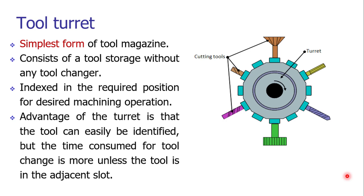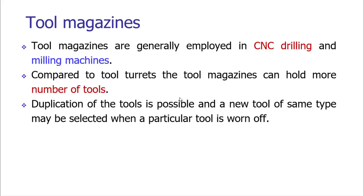Tool turrets are basically used in semi-automatic mode. In some automatic operations where limited tools are needed, the tool turret arrangement is compact and useful. Some CNC machine tools do have an arrangement for changing the tool from the turret and loading it to the spindle. However, if the tool turret is at a certain distance, it will take time for the tool to travel to the spindle. The tool magazine is an advanced or modified version of the tool turret with higher capacity.